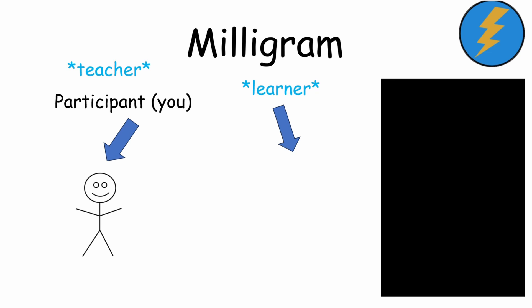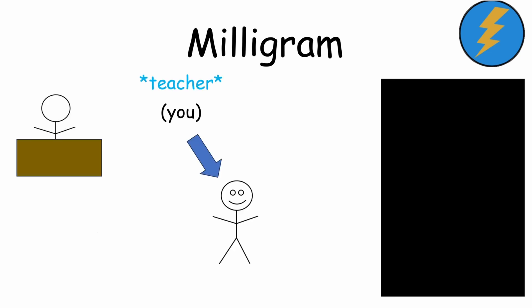The scientist running the experiment sat in a desk behind you. Whenever the learner made a mistake in memorization, you were forced to administer an electric shock.